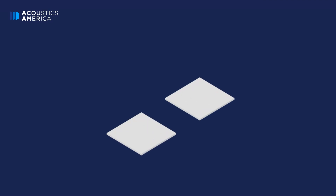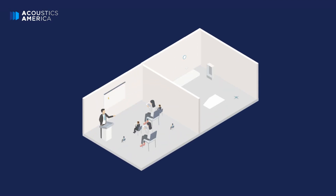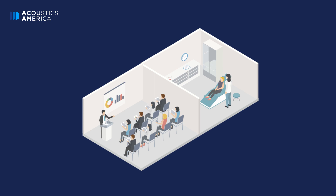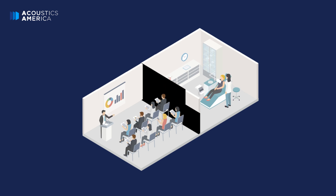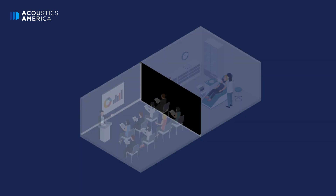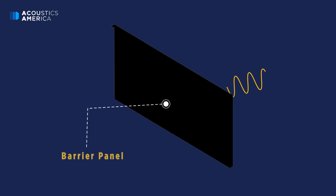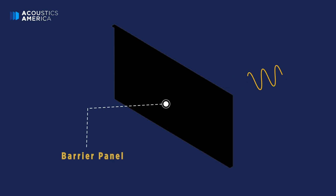The term soundproofing is often used interchangeably with sound blocking and refers to preventing sound from entering or exiting a space. To effectively block sound, a barrier must be provided to block the sound waves.